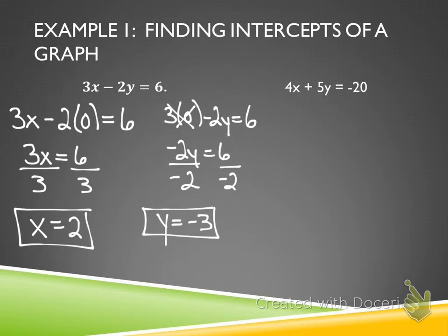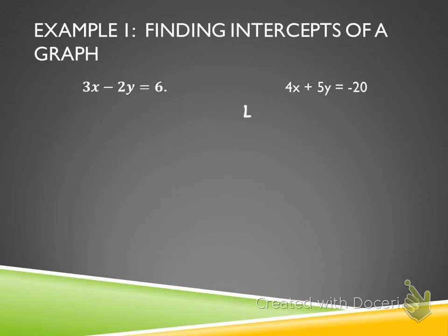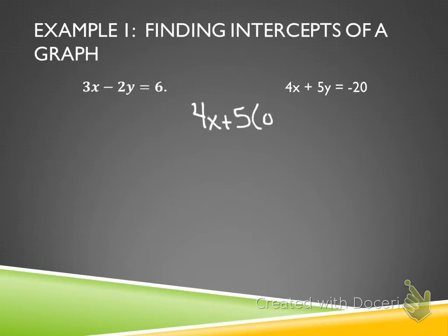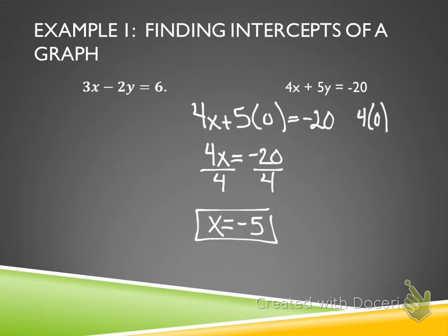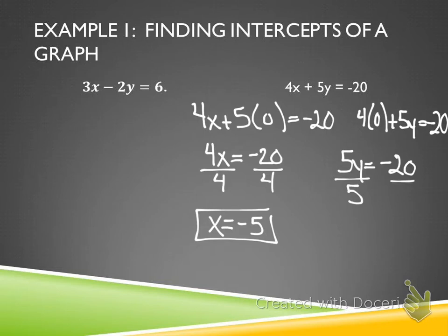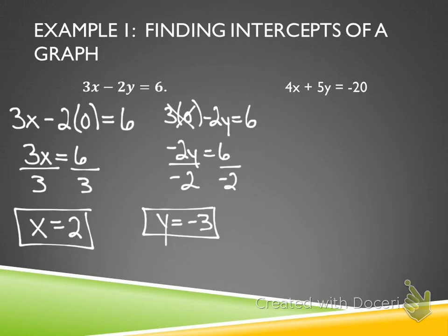Now do the same thing for the second problem — find the x and y-intercept. When solving for x, substitute zero for y: 4x + 5(0) = -20, so 4x = -20, divide by four, x equals negative five. Then substitute zero for x: 4(0) + 5y = -20, so 5y = -20, divide by five, y equals negative four.